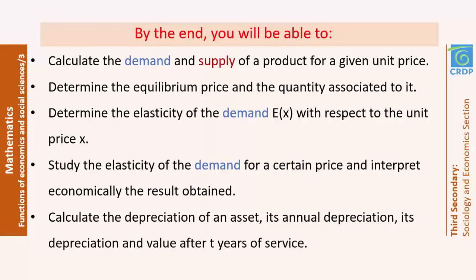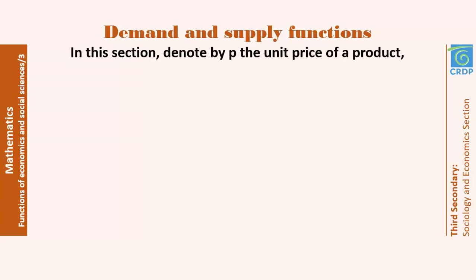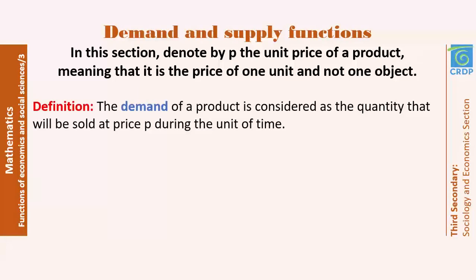Let's start with the demand and supply functions. In this part, we will denote P as the unit price. The unit sometimes is formed with one item or more than one item, depending on the question. P is the price of one unit, not of one object. The demand of a product is considered as the quantity that will be sold at a price P during the unit of time — it is the quantity bought by people.